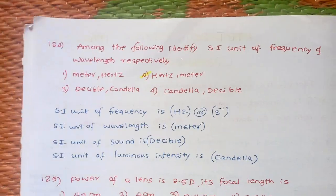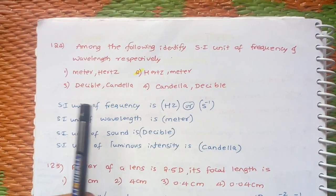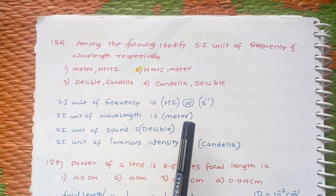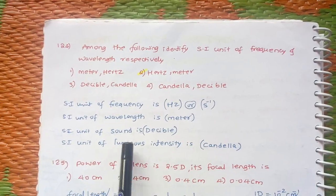Next, this is an easy question. Assign SI units for frequency and wavelength. For frequency, the SI unit is Hertz or per second. For wavelength it's meter. Decibel is for sound and Candela for luminous intensity.